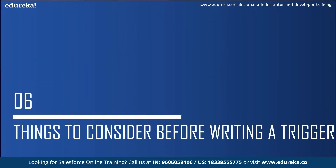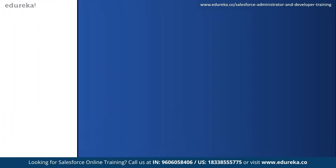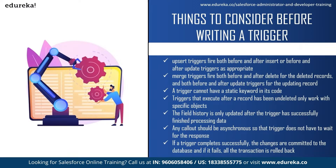Now let us take a look at the things to consider before implementing a Salesforce trigger. First, upsert triggers can fire both before and after insert or before and after update triggers as appropriate. Merge triggers can fire both before and after delete for deleted records, and both before and after update for updating records. A trigger cannot have a static keyword in its code. Triggers that execute after a record has been undeleted only work for specific objects. Field history is only updated after the trigger has successfully finished processing the data. Any callout should be asynchronous so that the trigger does not have to wait for the response. Finally, if a trigger completes successfully the changes are committed to the database, and if it fails all transactions are rolled back to their previous state.